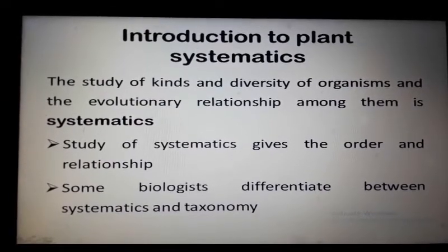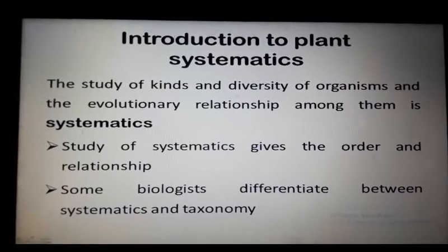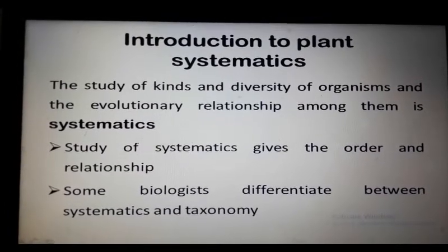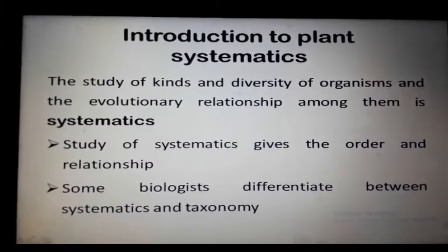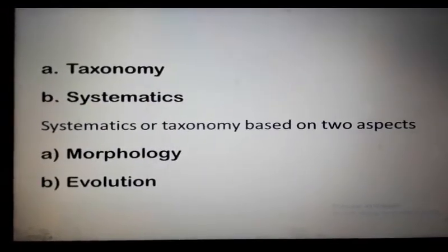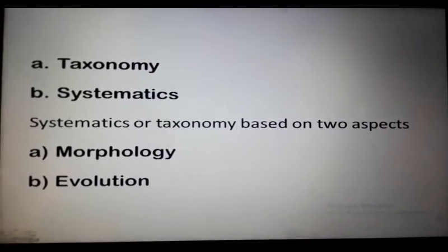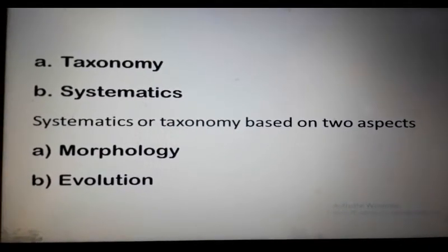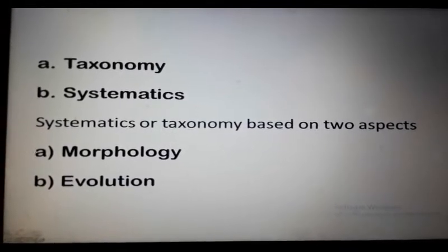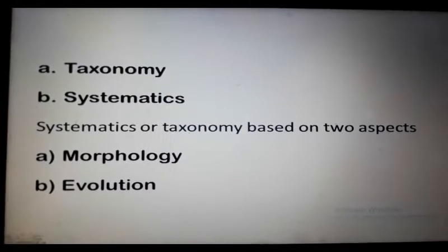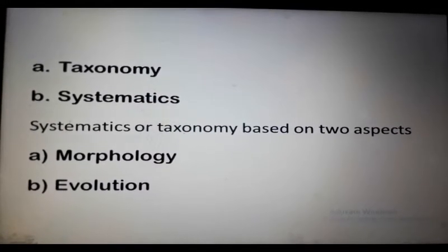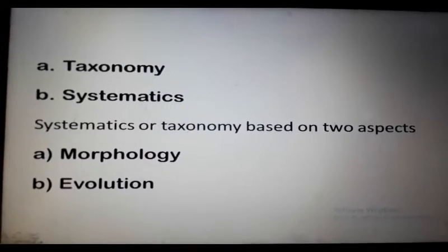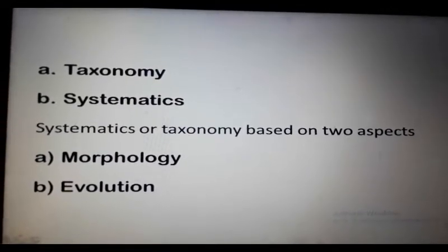This grouping is based on the degree of evolutionary relatedness. Some biologists differentiate between systematics and taxonomy: taxonomy refers to the original description of species, while systematics refers to the assignment of species into evolutionary groups. Systematics or taxonomy is based on two aspects: morphology and evolution.